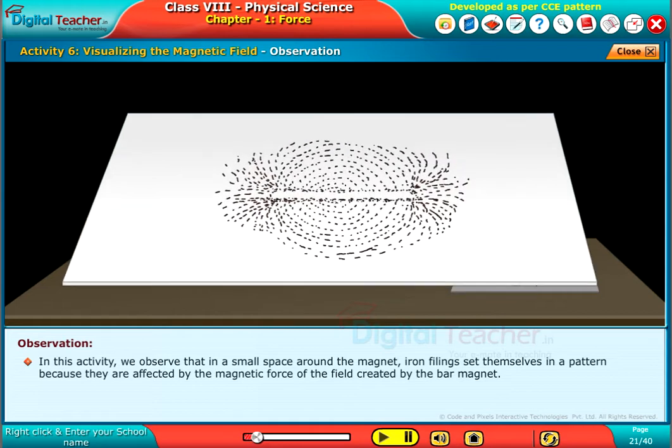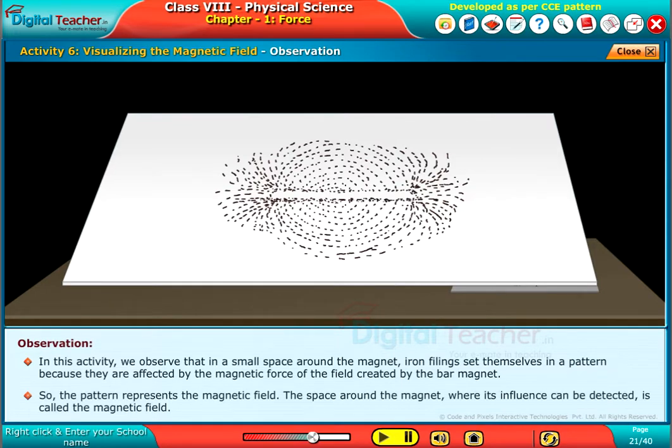In this activity, we observe that in a small space around the magnet, iron filings set themselves in a pattern because they are affected by the magnetic force of the field created by the bar magnet. So, the pattern represents the magnetic field. The space around the magnet, where its influence can be detected, is called the magnetic field.